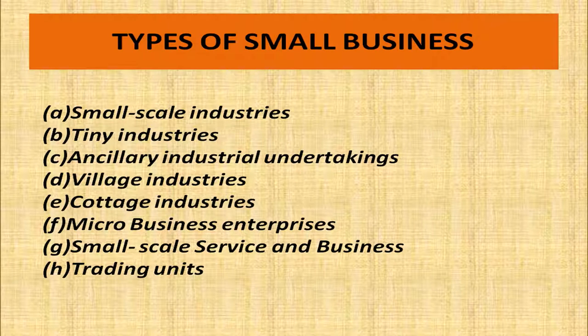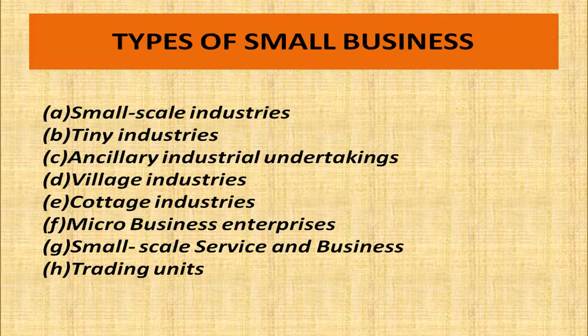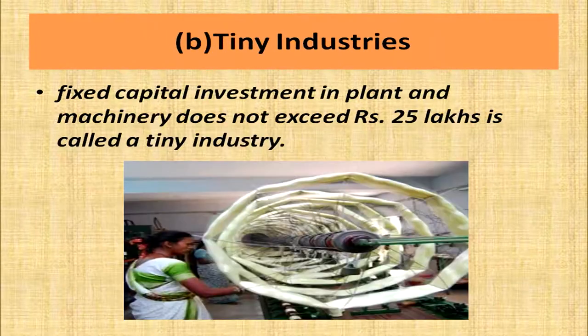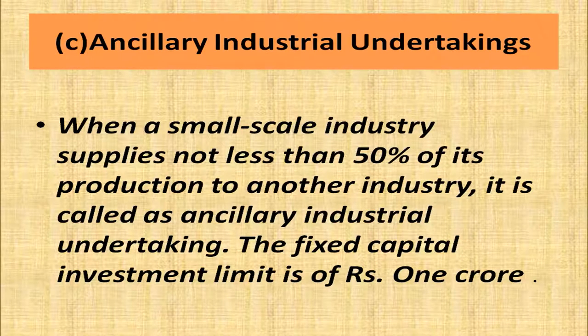There are various types of small business: small scale industries, tiny industries, ancillary industrial undertakings, village industries, cottage industries, micro business enterprises, small scale service and business, and trading units. Small scale industries are those in which fixed capital investment in plant and machinery does not exceed one crore. Tiny industries are those in which fixed capital investment in plant and machinery does not exceed 25 lakhs.